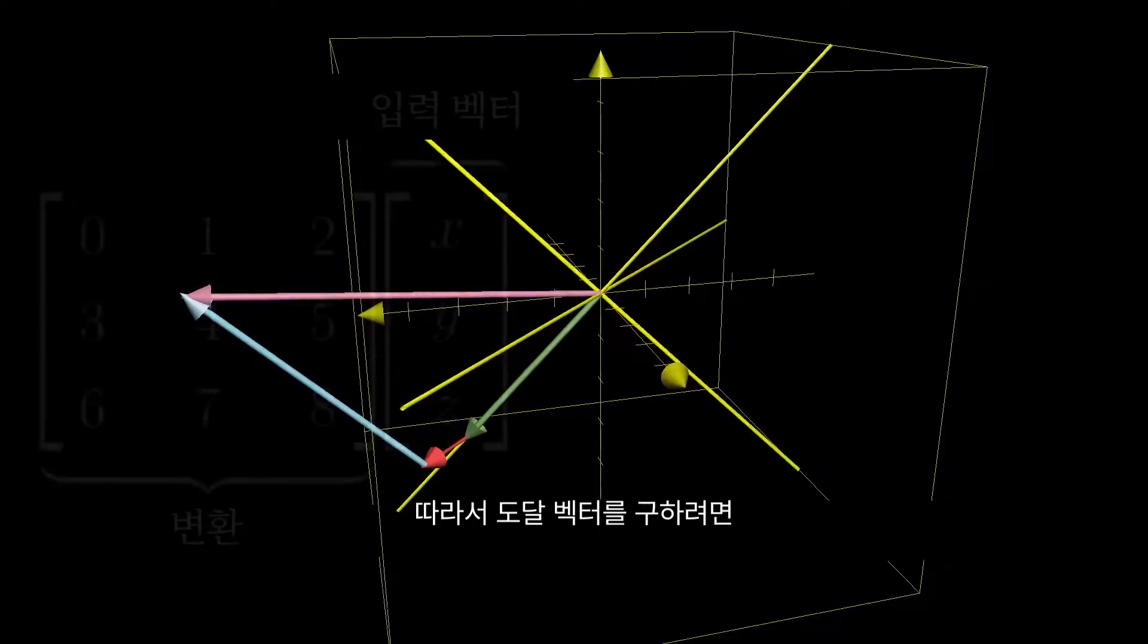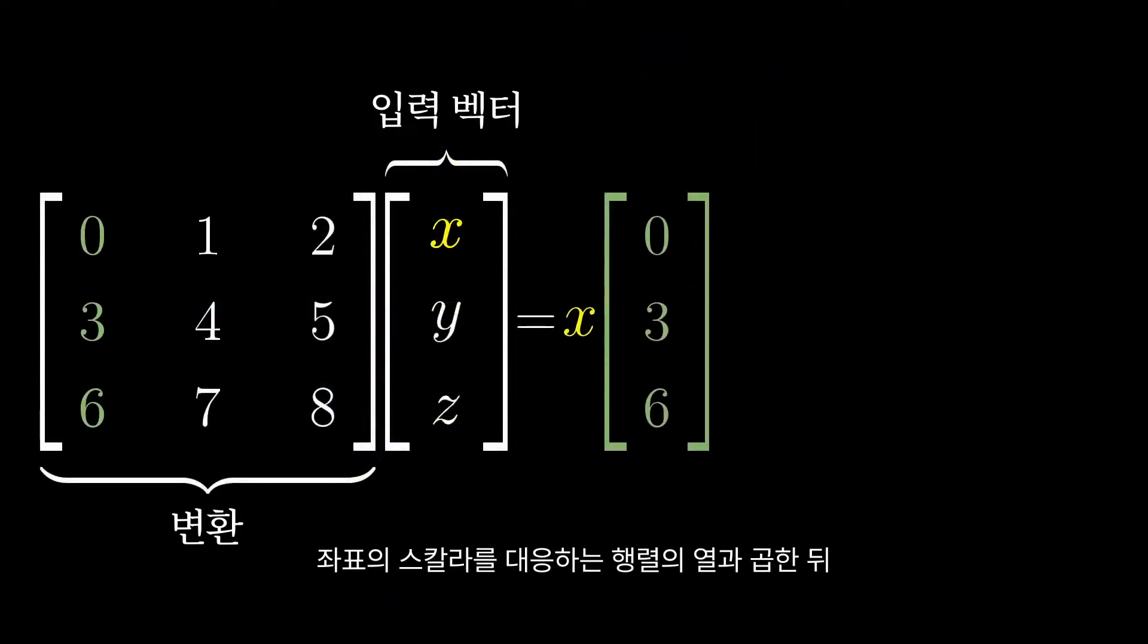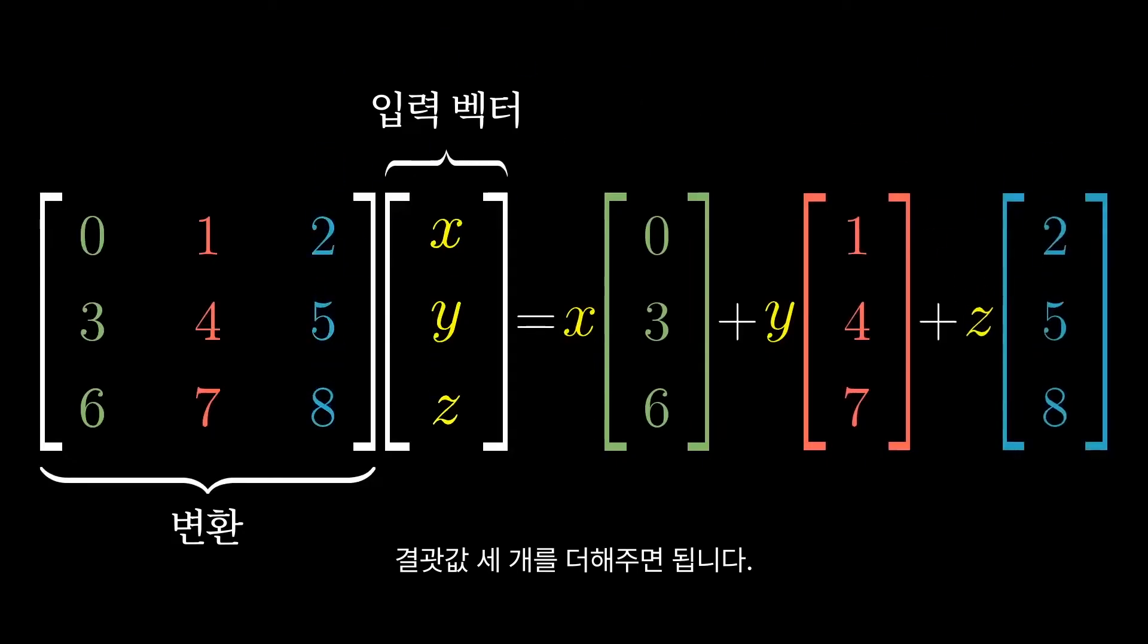So to see where your vector lands, you multiply those coordinates by the corresponding columns of the matrix, and then you add together the three results.